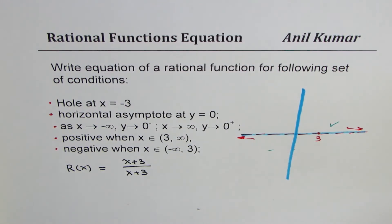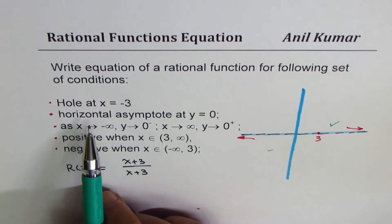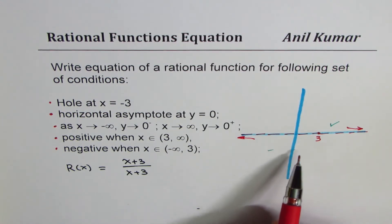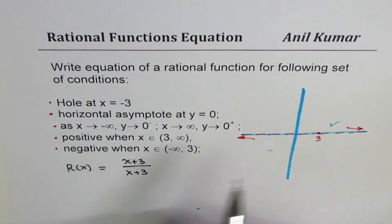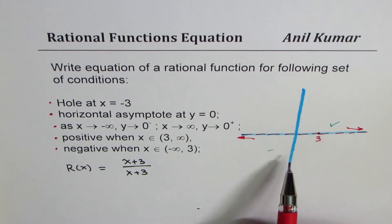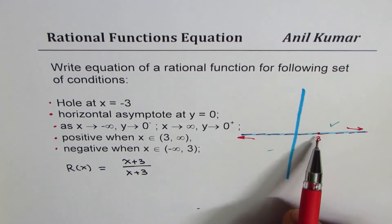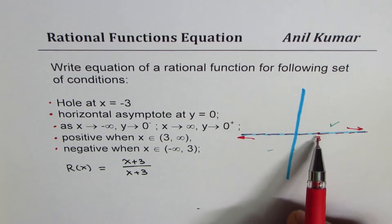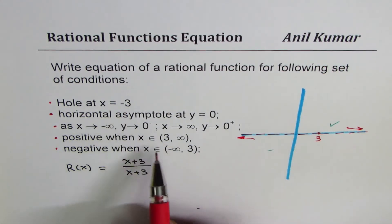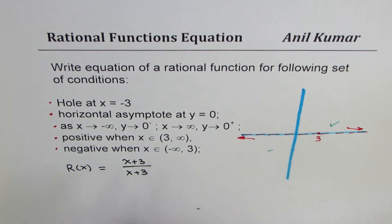These are the conditions given to us, and we need to figure out the equation or the graph of this function. One thing is clear: the function is continuous. Since we are saying that left side of 3 it is negative and right side is positive, there could be a vertical asymptote at 3 — that is possible. Or it is continuous, so let us assume that this function is continuous, though the condition is not explicitly given to us.